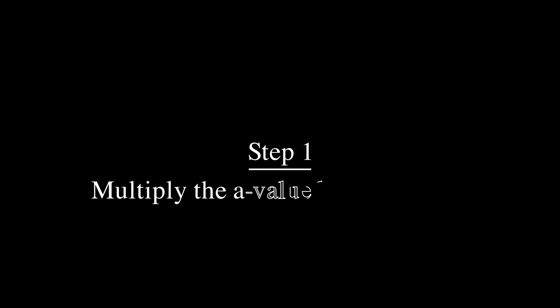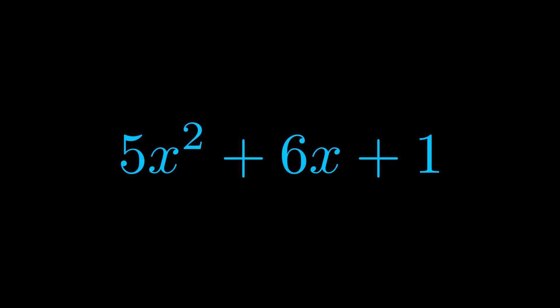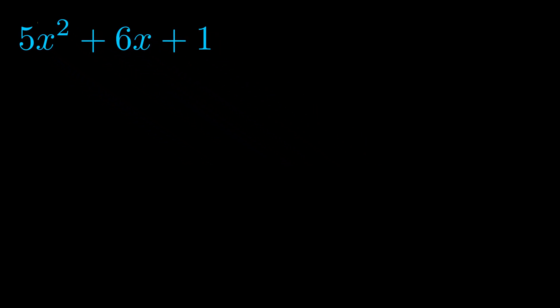Step one when factoring an equation of this form is to multiply the a value by the c value. Here we can see that our a value is the coefficient on the x squared term and our c value is the constant term.